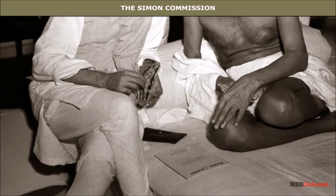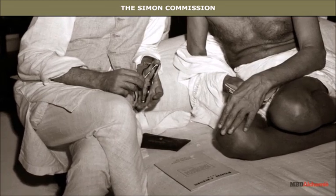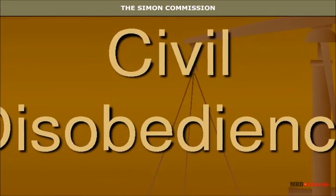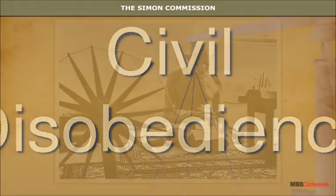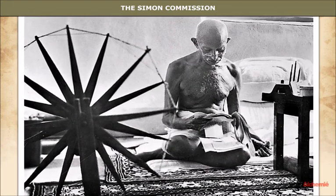In December 1929, under the presidency of Jawaharlal Nehru, the Lahore Congress session formalised the demand of Purna Swaraj, or full independence for India. The Indian National Congress authorised the working committee to start the civil disobedience movement as and when it might deem fit. Mahatma Gandhi took the leadership of the Congress and decided to start the movement.